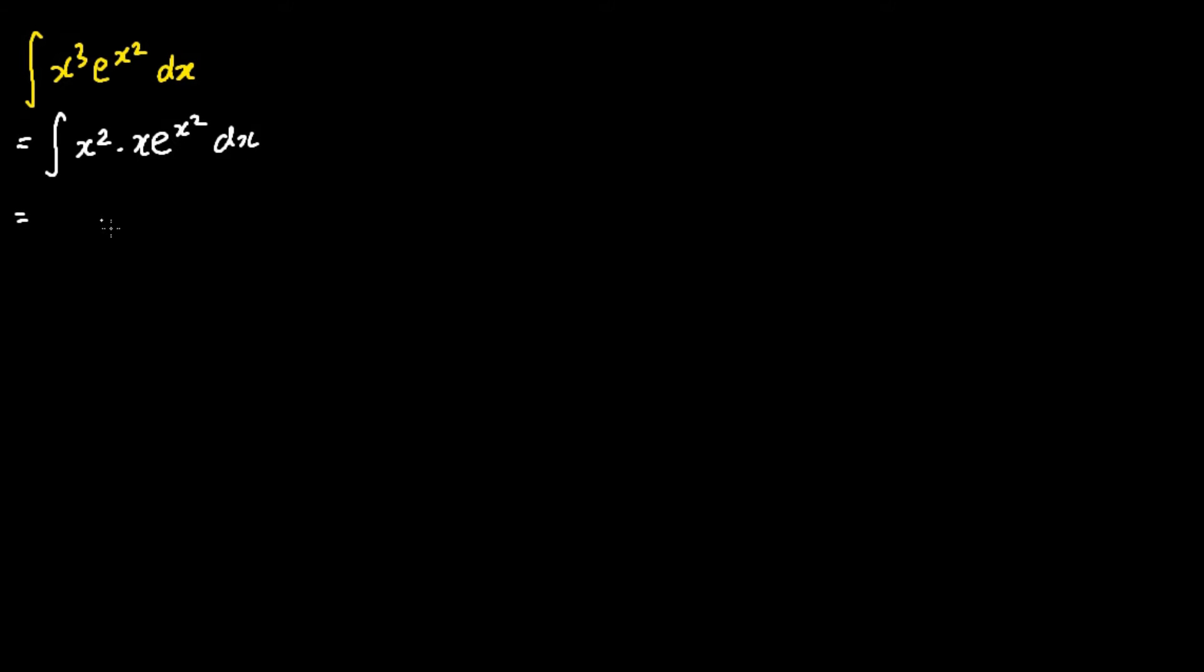And then we're going to multiply half outside the integral, and then within the integral, I'm going to multiply by 2. So we get the following, which is half times the integral x squared times 2x e to the power x squared dx.